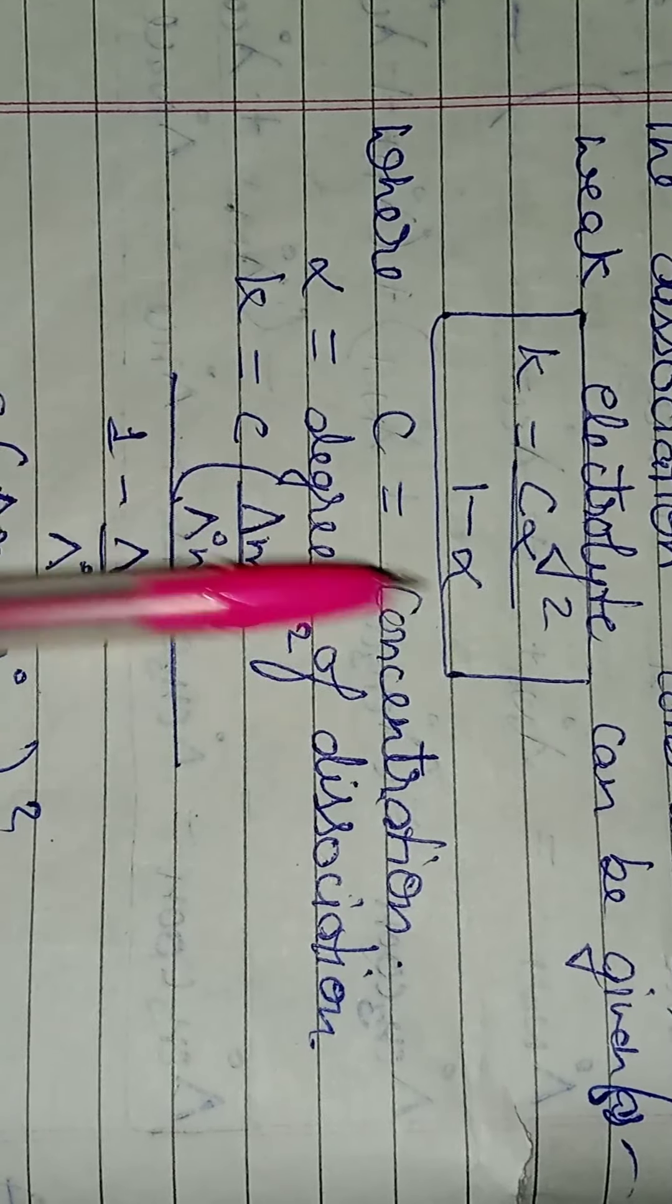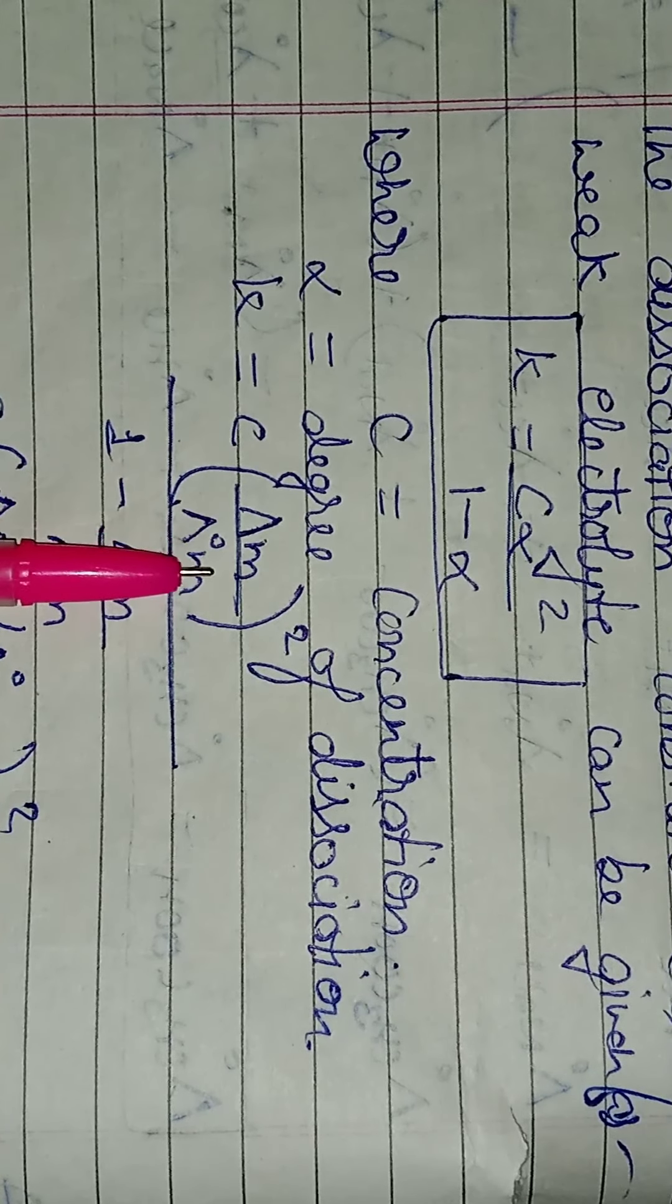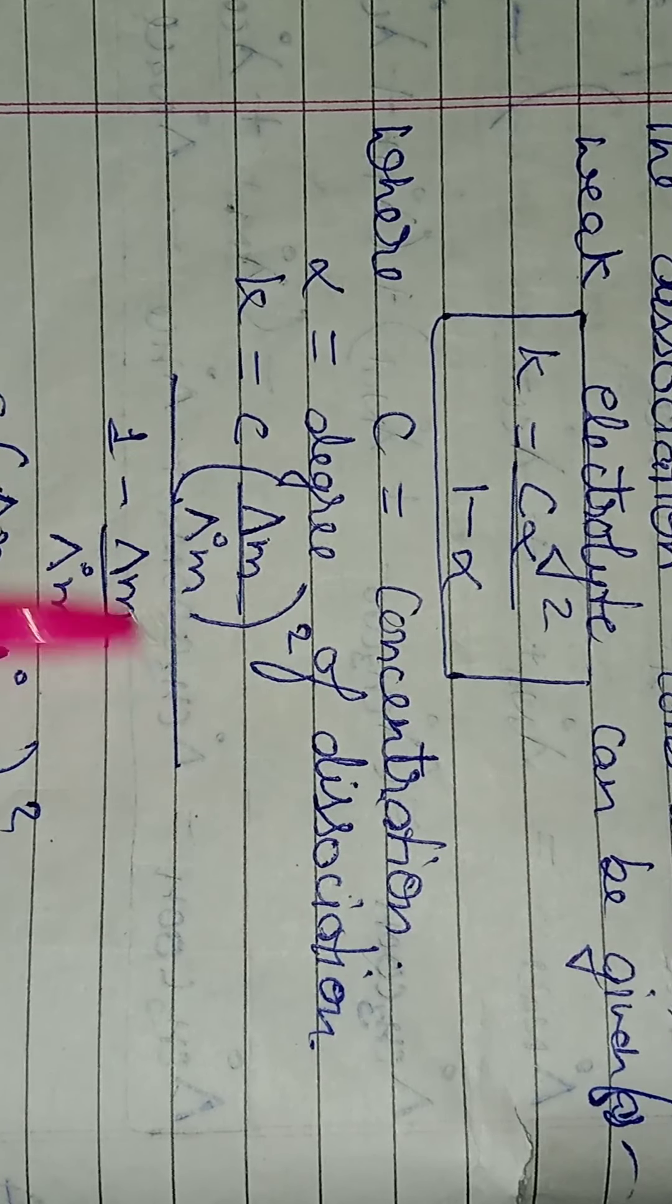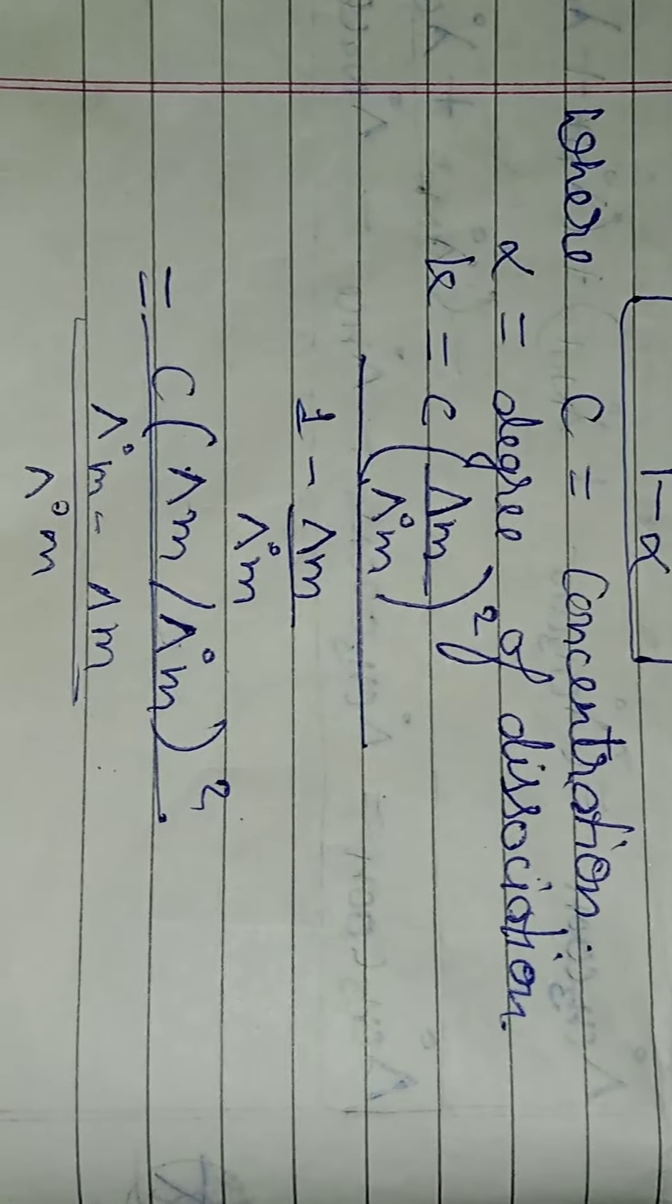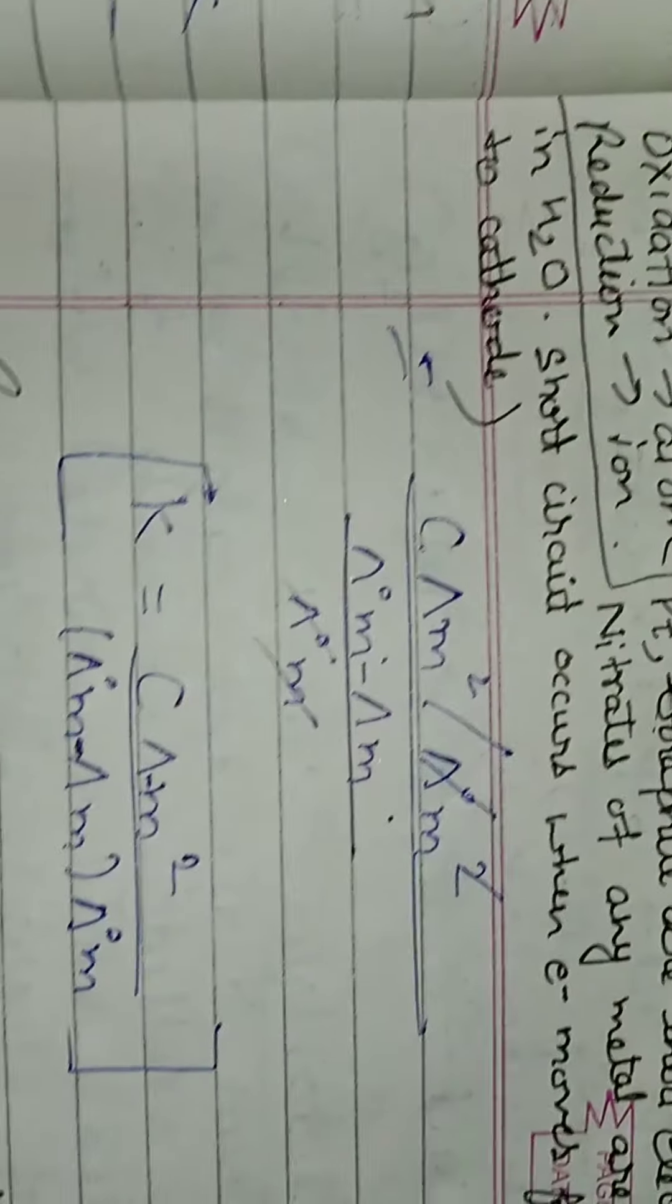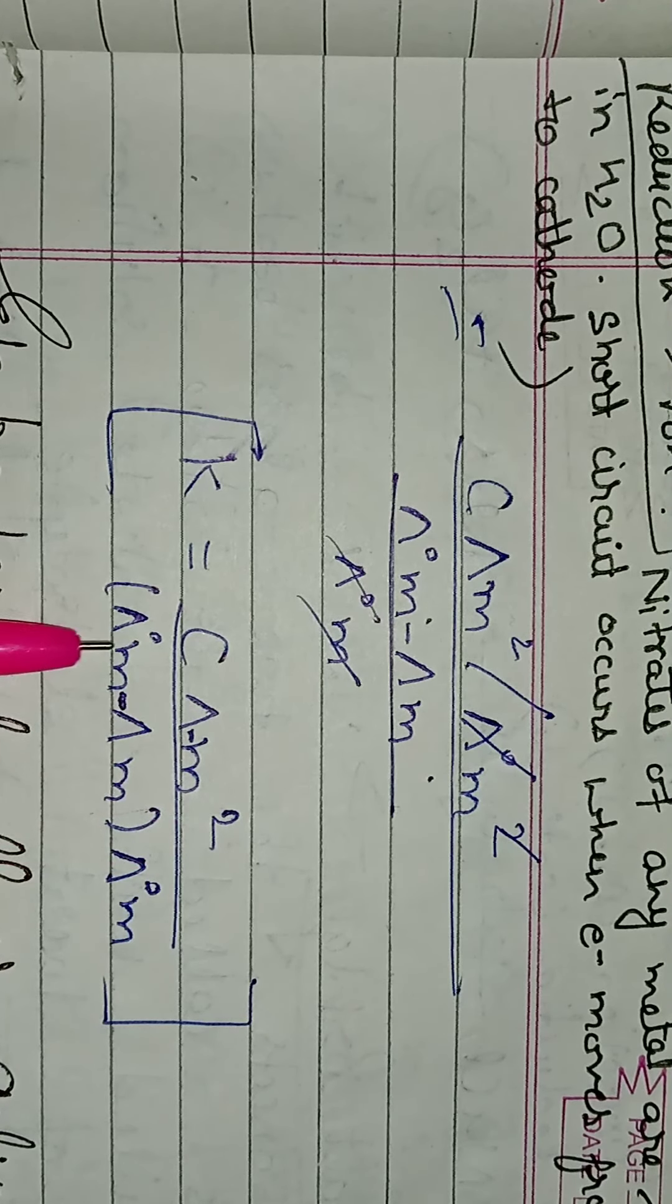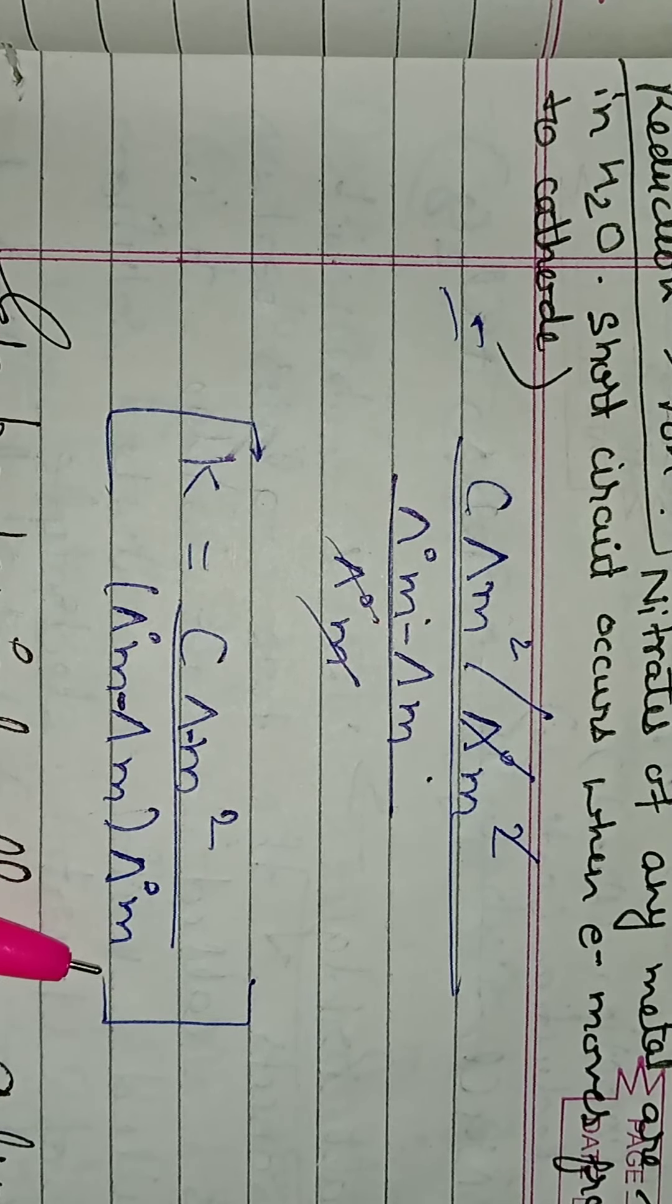Degree of dissociation ka lambda m upon lambda naught m ka whole square upon one minus lambda m upon lambda naught m. Isko jab hum solve kar dein is tarike se, toh dekhiye, kya aata hai. Ye aayega aapka, lambda m square upon lambda naught m minus lambda m into lambda naught m.